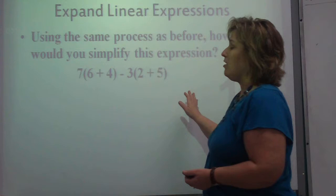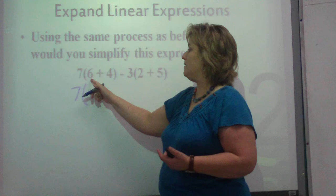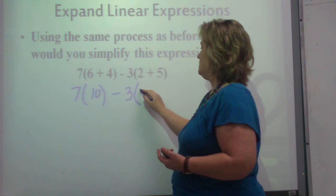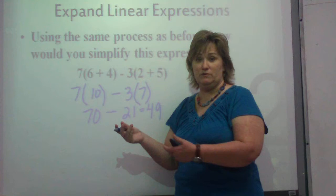Okay? So, using the same process that we used over here, and then also thinking about terms, let's see if we can figure out how to simplify this. Now, we know that this is 7 times 10 minus 3 times 7. So this is 70 minus 21, which equals 49. As long as we got numbers in there, that's the way you would do it. You would follow PEMDAS and you would do that.